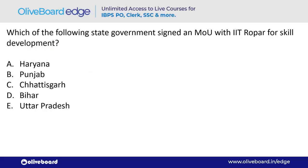Which state government signed an MOU with IIT Ropar for skill development? The answer is Punjab government — option B.